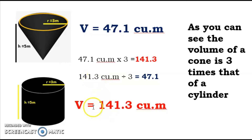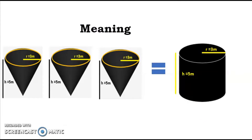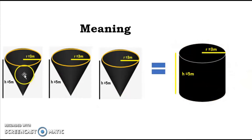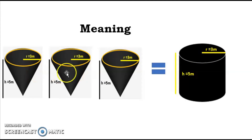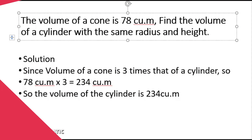And if you divide 141.3 (the volume of the cylinder) by 3, you get 47.1, which is the volume of the cone. So the volume of a cylinder is 3 times that of a cone with the same dimensions. In other words, 3 cones with the same measurement as the cylinder equals 1 cylinder. If you fill this cylinder with water, you will need 3 cones of the same radius and height to fill it exactly.